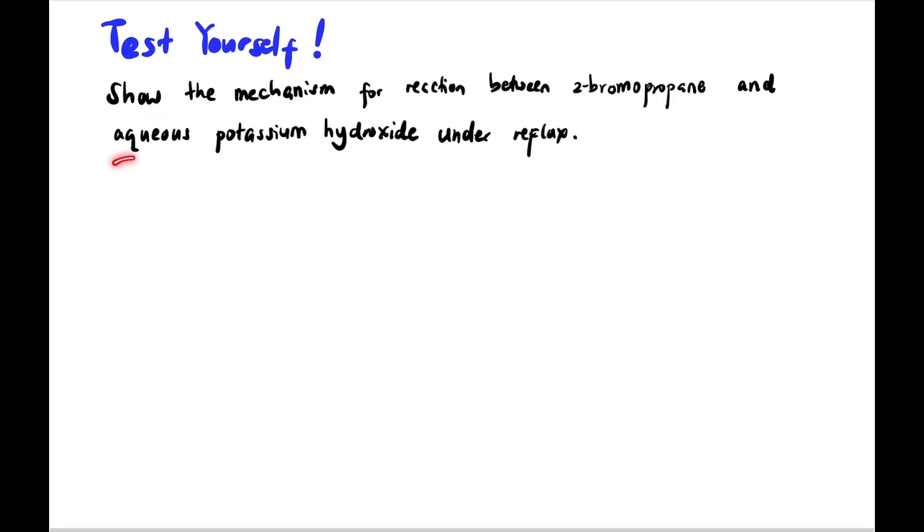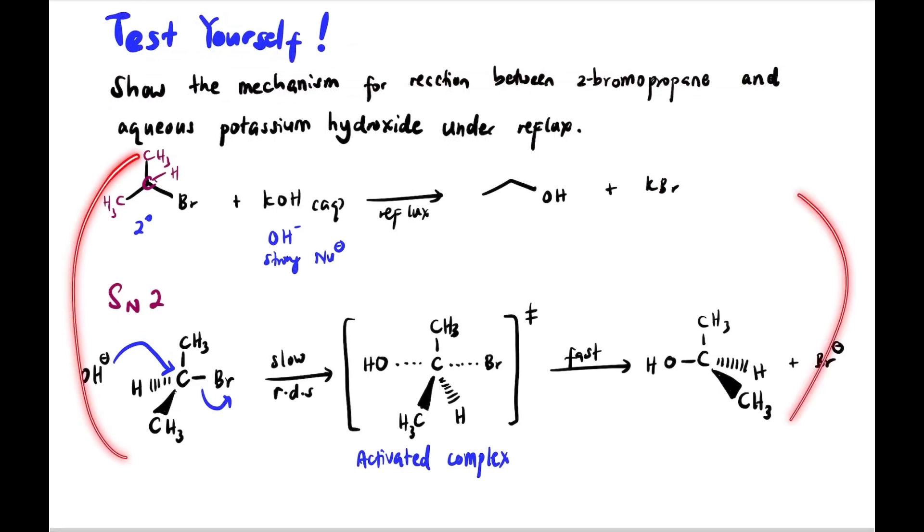Test yourself with this question. Show the mechanism for the reaction between 2-bromopropane and aqueous potassium hydroxide under reflux. These are the answers. Make sure the drawing is in 3D form and the final product's position is reversed from the original.